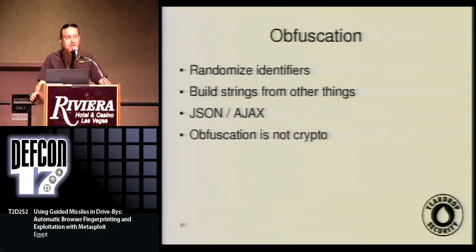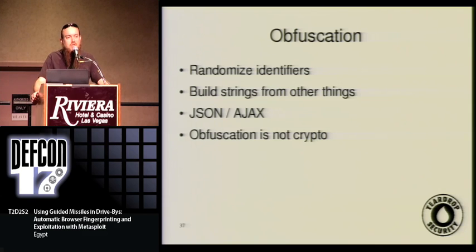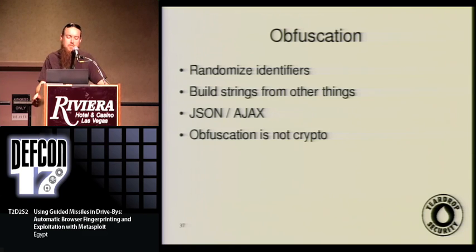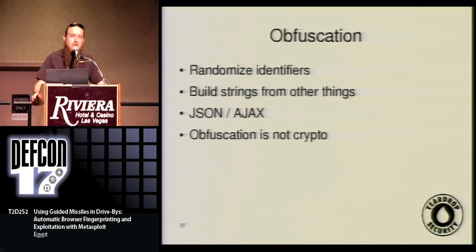The way we do that is largely through obfuscation. We can randomize identifiers in JavaScript — all we have to do is know the names of all of our identifiers, randomize them up into ASCII strings, and that makes it a lot more difficult to fingerprint. Secondly, we can build strings out of things that become strings. String.fromCharCode can take a bunch of hex digits and turn them into their ASCII equivalents. We can use that, we can use unescape — there are a number of ways of building a string from things that aren't strings and won't trigger AV. Another solution is using Ajax to send a little bit at a time, downloading chunks of JavaScript and running each piece.